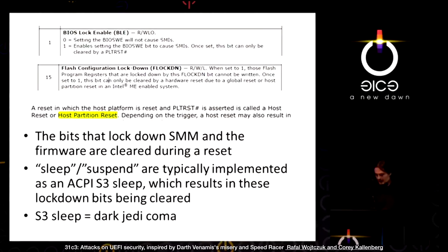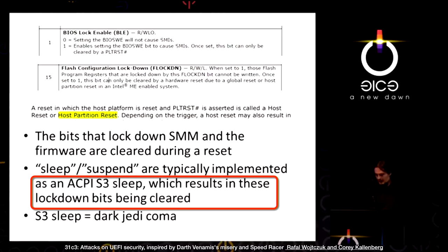Thunderstrike v2 could use the Dark Jedi sleep attack, which was introduced yesterday here at 31C3 by Raphael and Corey. What they found is that during an S3 sleep, all of the lock bits are cleared, including Flockdown and the BIOS control. The Thunderbolt option ROM is in a prime position to do this sort of attack — it doesn't need any privileged execution, it's already running in ring zero. There wasn't enough Club Mate for me to implement this last night, but look for it in an upcoming paper. Apple could add TPM hardware back to their Macs — it wouldn't prevent the Dark Jedi attack, but it would at least let you detect it on the next boot.